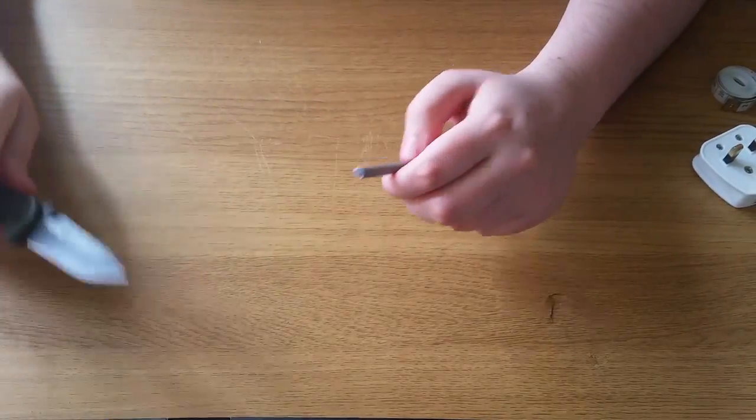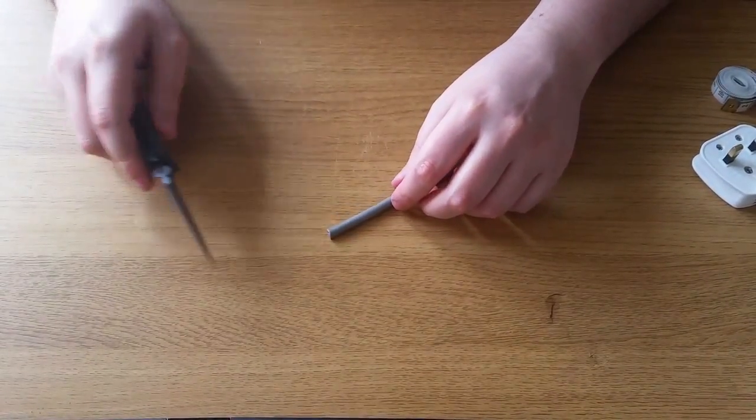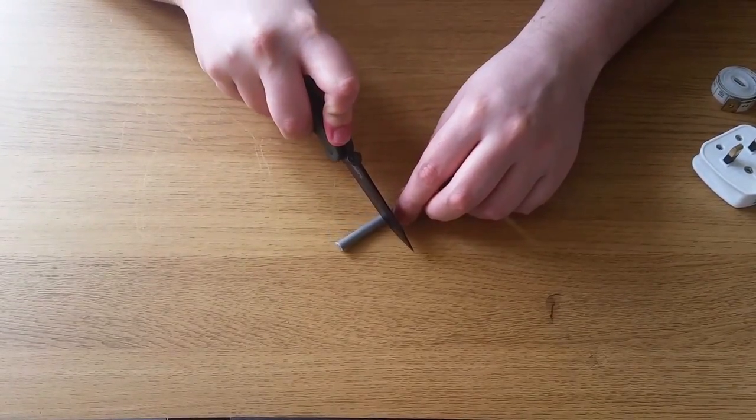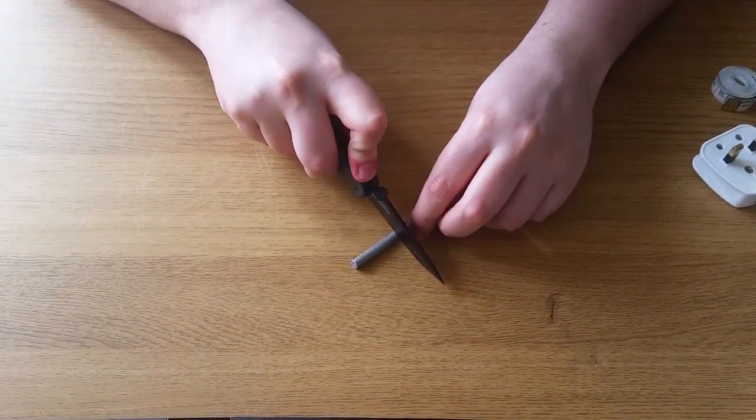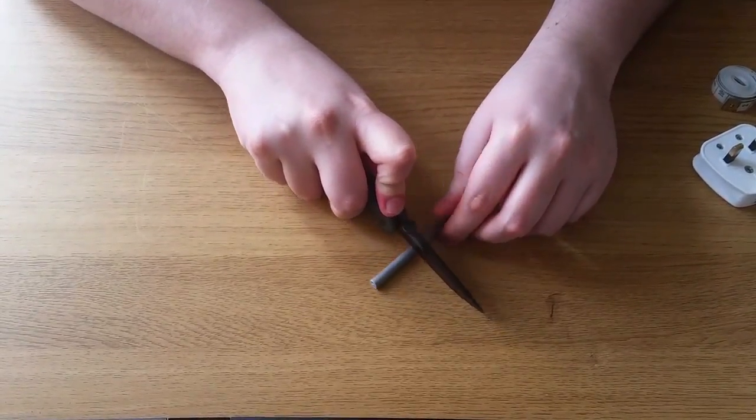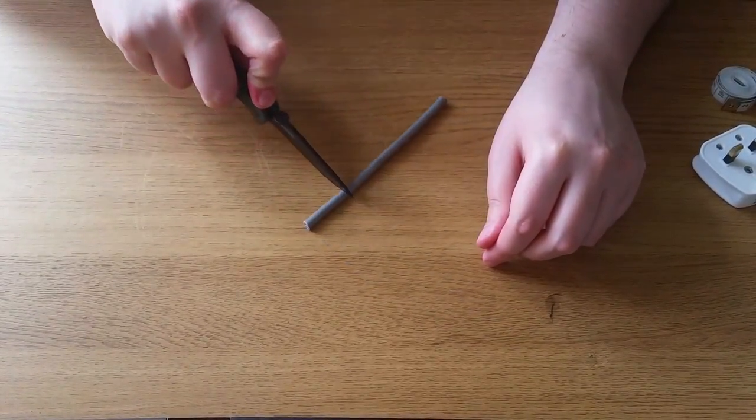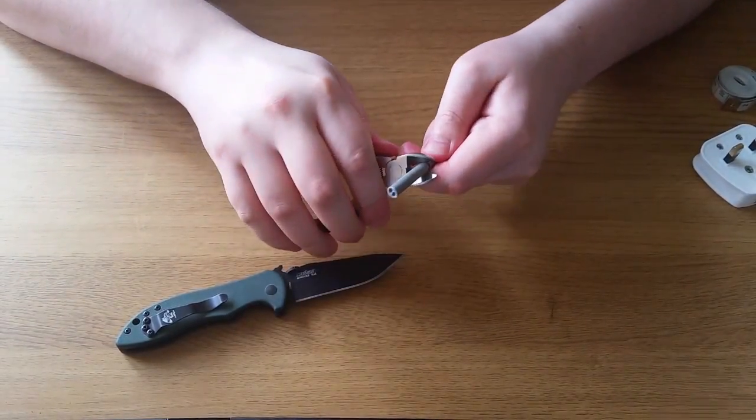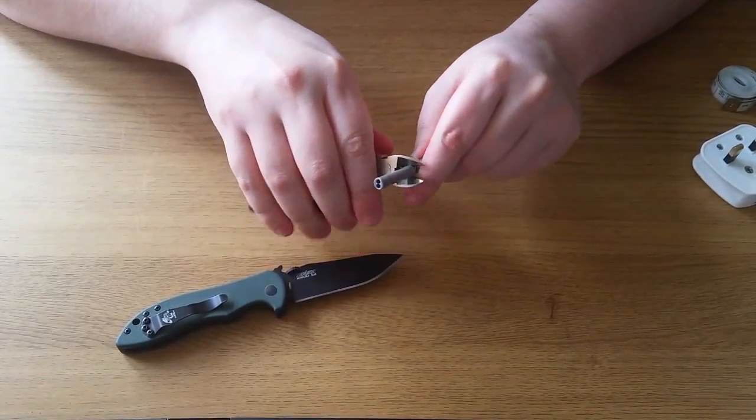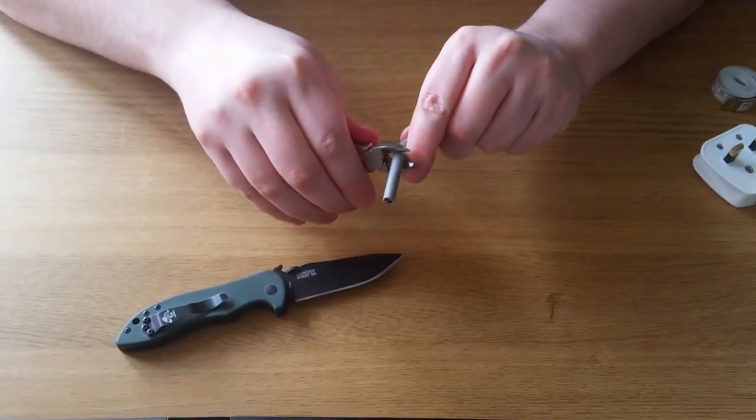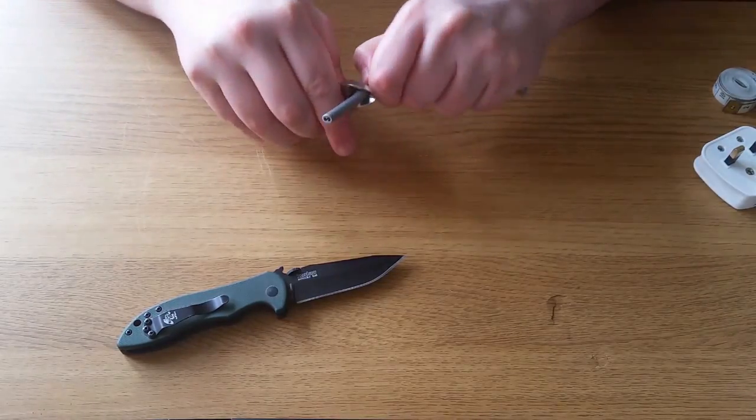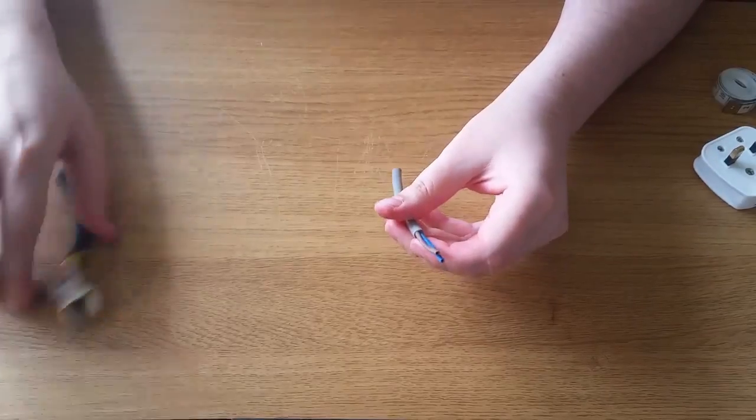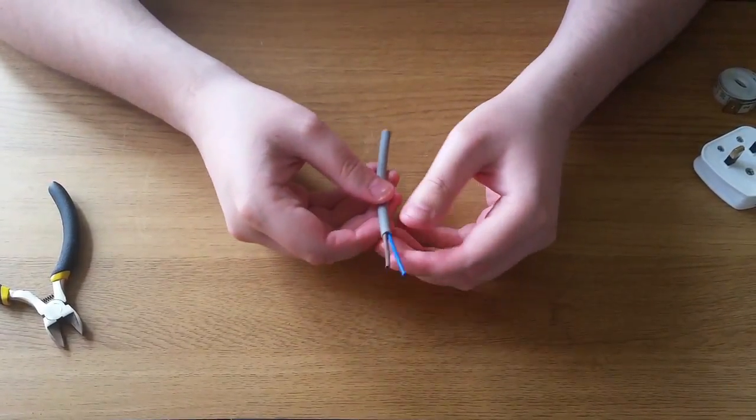First, start off by cutting a decent amount of insulation off, typically around 40mm or 4cm is a good starting point. Carefully cut through the insulation, making sure you don't cut too deep through the wires. Once you're through, simply pull the insulation off. Like so. This will leave you with your exposed wires.